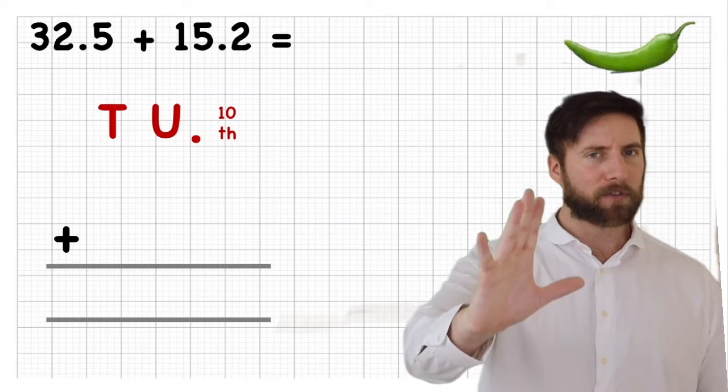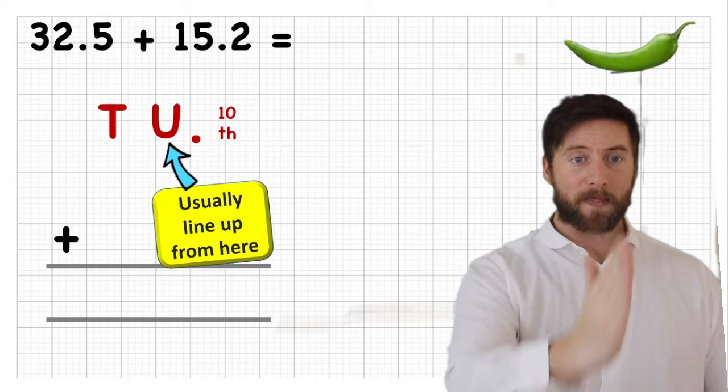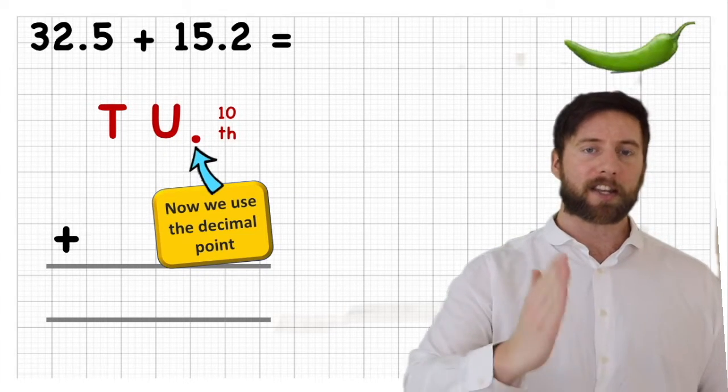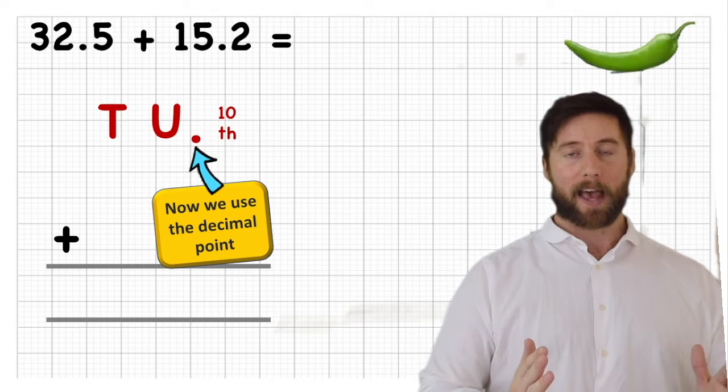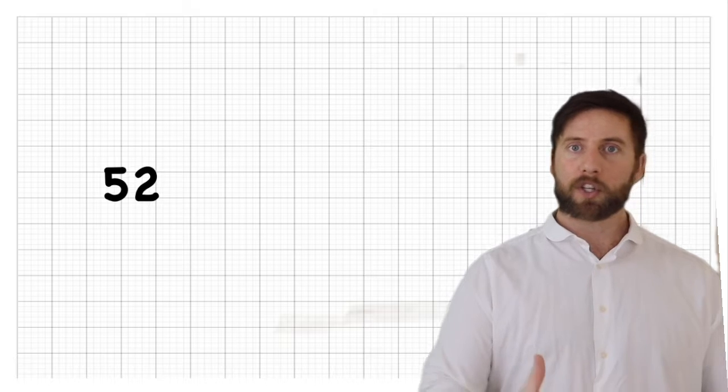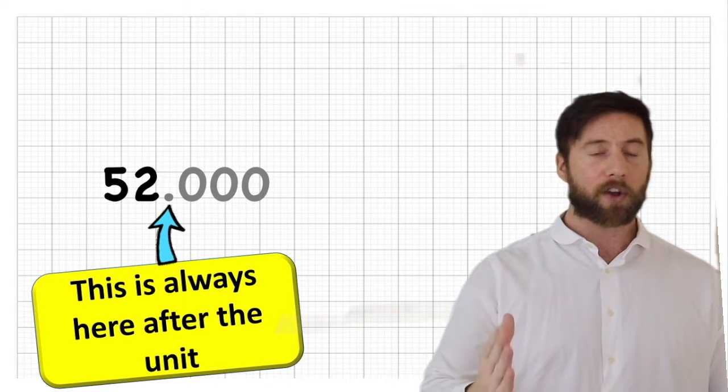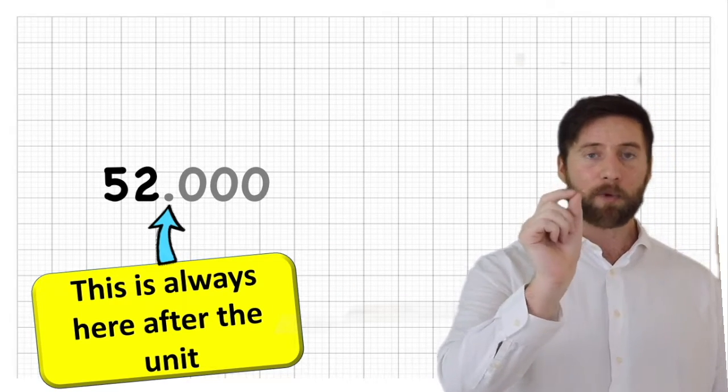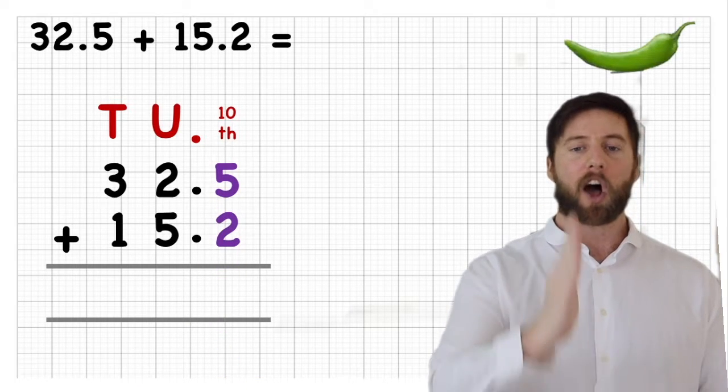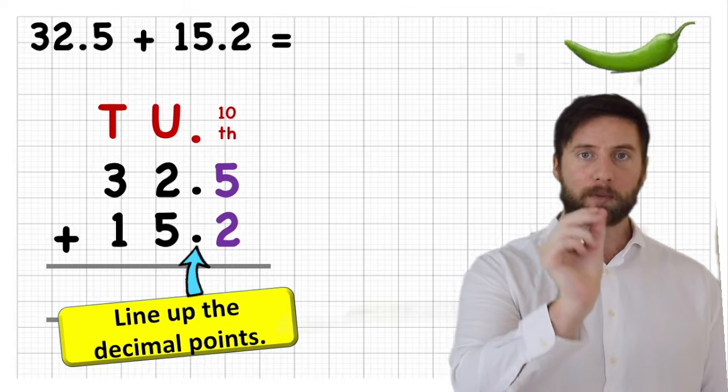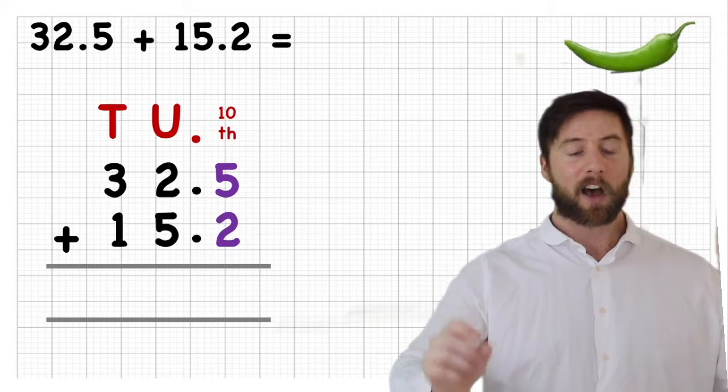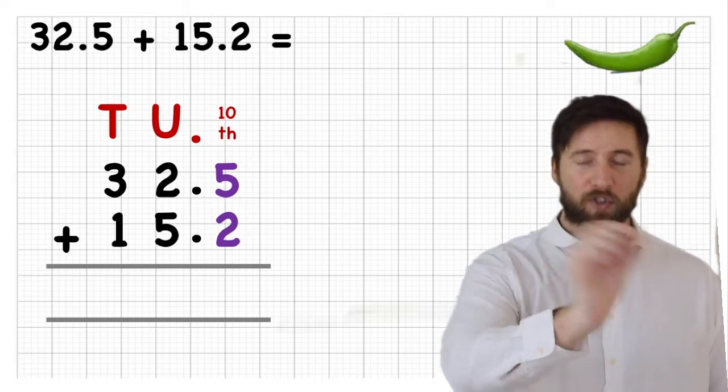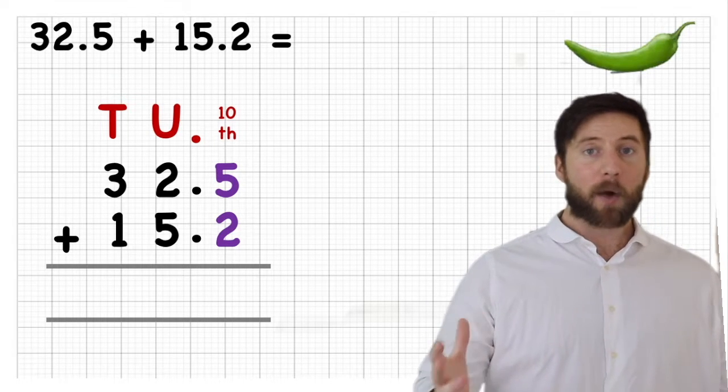Now I hear you say, wait, I'm confused. You've always told us to make sure we line our things up with the units. Do we still do that in this case? The answer is yes, but we also look at our decimals. The decimals will always be there. So even if we have a number like 52, just because there's not a decimal after it doesn't mean it's not there. So we can always guarantee that the decimal point will be there. So we're going to use that to line up our numbers and make sure that we put all our decimals on top of each other.